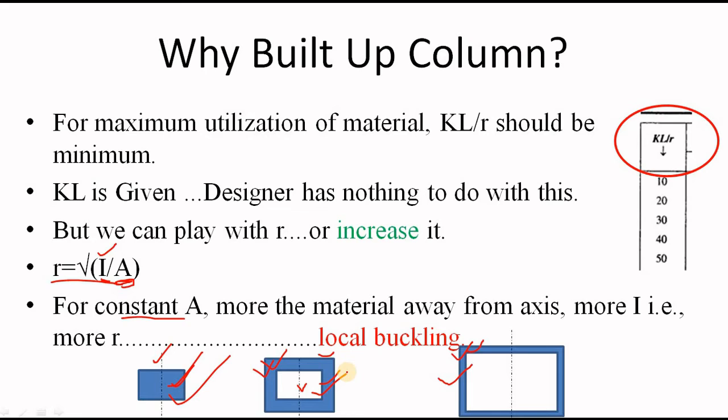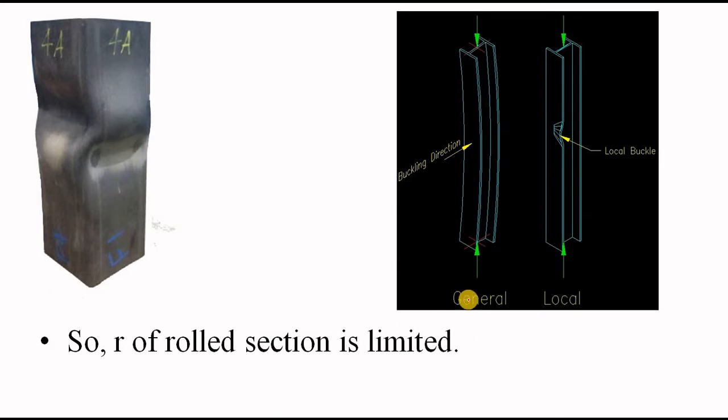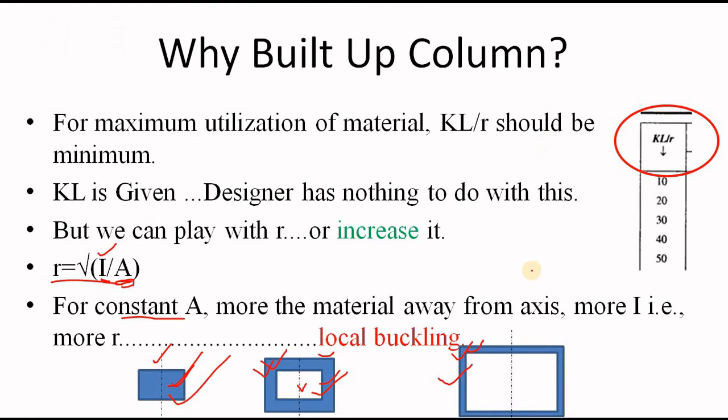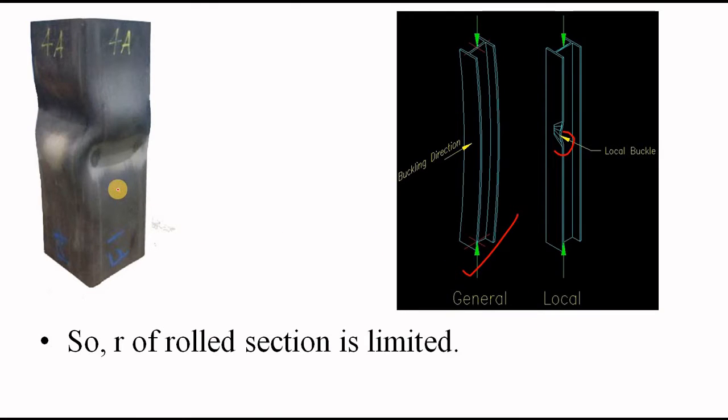Now, what is the meaning of local buckling? Till now, we have tried to resist this global buckling or the general buckling of the column by reducing the slenderness ratio or the KL by r value. And we are successful in doing so. But our material has buckled locally. In our case, the cross section was rectangular. So, when it buckles locally, it will look like this.